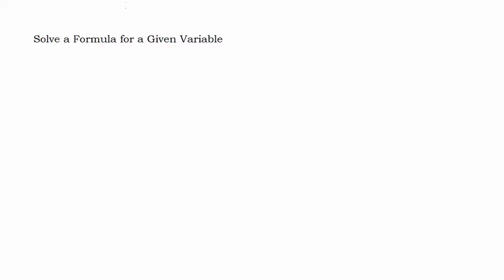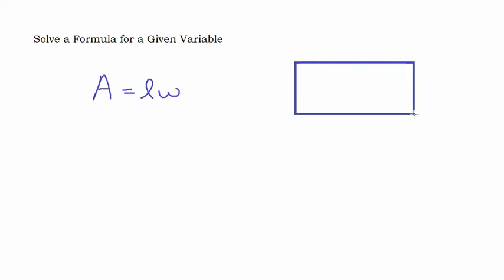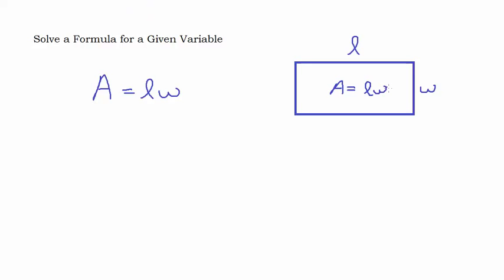In this video, we're going to look at solving a formula for a given variable. Some of these can be really complicated, and some of them can be easy. So let's start with something easy to kind of get the idea of it. Let's start with a formula that hopefully we all know: area equals length times width. Of course, I'm talking about a rectangle. To find the area of this figure, we take the length times the width. There are lots of area formulas.